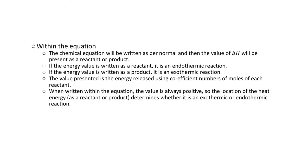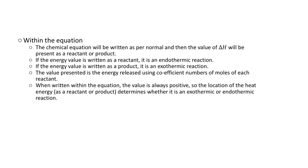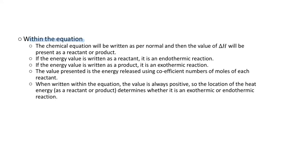Alternatively, they can show the amount of energy transferred by writing it within the equation. The chemical equation will be written as per normal, and then the value of the delta H will be written as a reactant or a product. If the energy value is written as a reactant, it's endothermic — because you need to put heat in for this reaction to occur, i.e. the heat from the surroundings goes into the system. Or if the energy value is written as a product, it's an exothermic reaction. When written within the equation, the value is always positive, so the location of the heat determines whether it's exothermic or endothermic, not whether it's positive or negative. It's really common for students to get it mixed up — seeing a positive value and immediately thinking it's endothermic when that's not necessarily true.